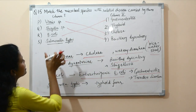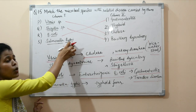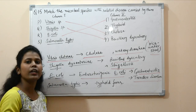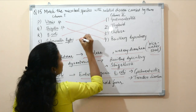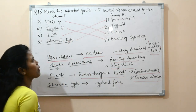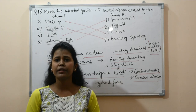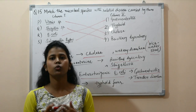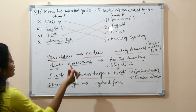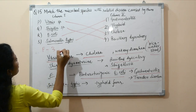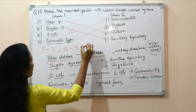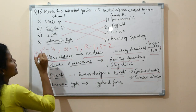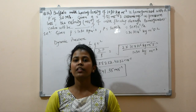Salmonella typhi, as the name suggests, causes typhoid. Another species, Salmonella paratyphi, causes paratyphoid fever. The main reservoir of Salmonella typhi is humans, and it is transmitted through contaminated food and water, including through food handlers. The answer is P3 Q4 R1 S2, option D for question 15.